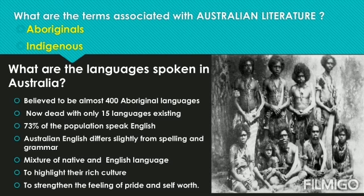Thus most of the literary works of Australia are a mixture of native language and English. This is deliberately done by writers to keep people connected to culture from generation to generation. It also strengthens the feelings of pride in their own culture and self-worth.